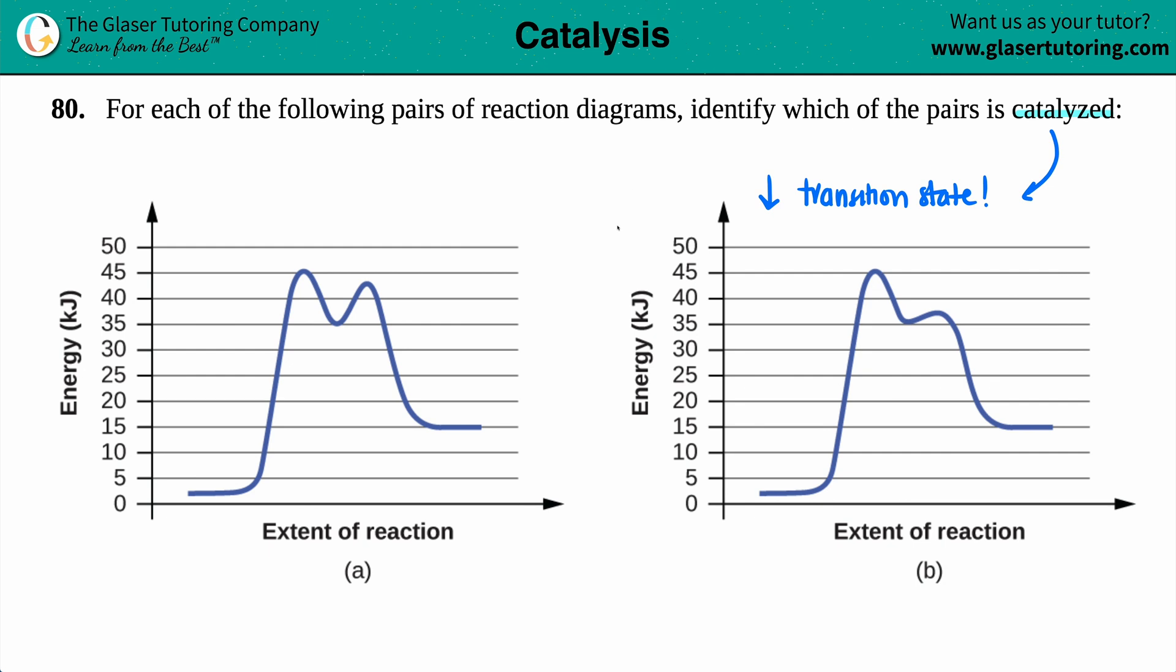So transition states are like the younger siblings of the activation energy. Activation energy is the energy needed to go from the start all the way up to the top. But the transition state is literally the tippy-tippy points, or if you have multiple peaks because you have multiple steps, these are your peaks. So if it's a one-step reaction, you'll only have one peak. But if you have a two-step reaction, you'll have two peaks.